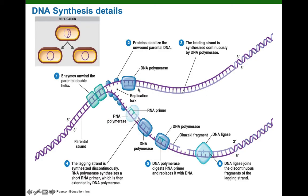Once DNA polymerase 3 gets started, it just keeps following the replication fork, copying the chromosome until it hits the termination of replication.